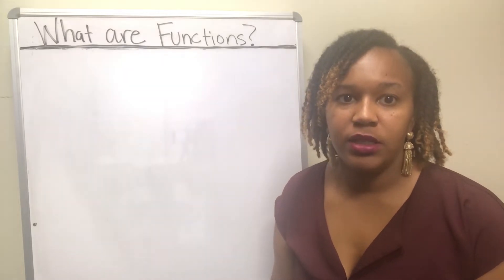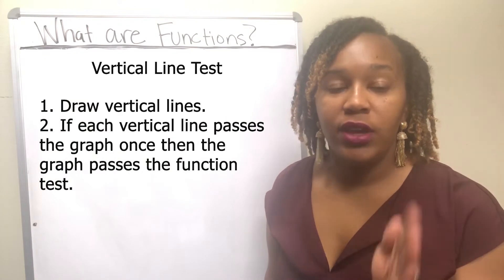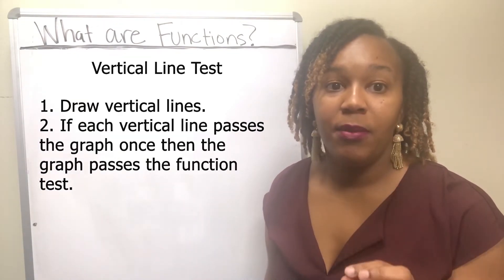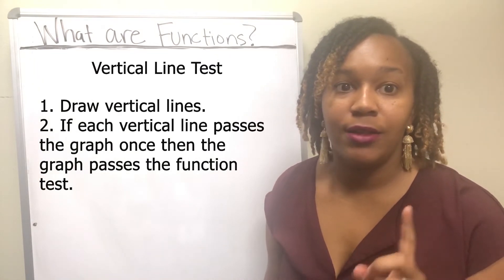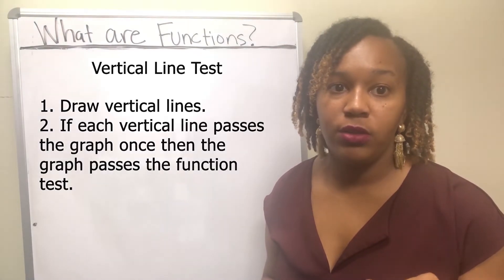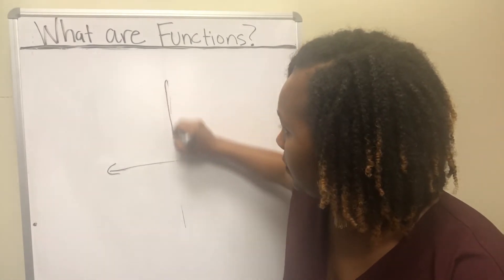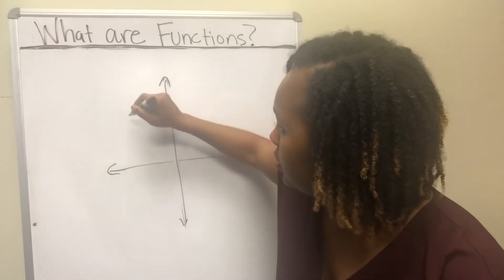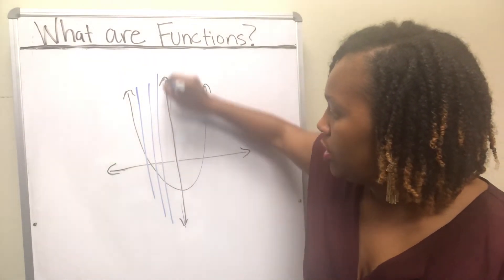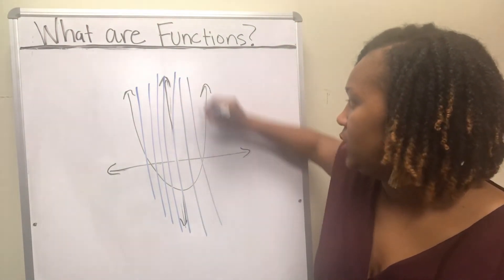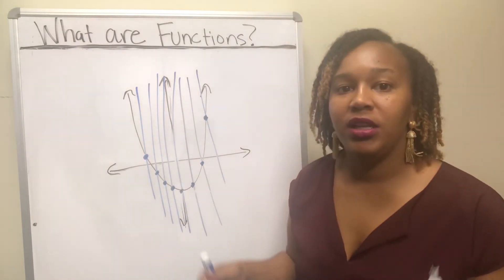You can also look at a graph and determine if it's a function using what's called the vertical line test. Draw vertical lines — lines that go straight up and down. If each vertical line passes through the graph in only one spot, then the graph represents a function. But if you can draw a vertical line that passes through the graph in more than one spot, then it is not a function. For example, if I had a U-shaped graph like a parabola, no matter where I draw that vertical line, it only passes through the graph in one point — so that graph represents a function.